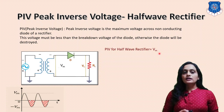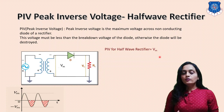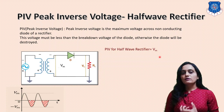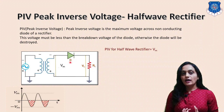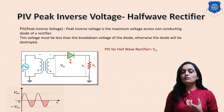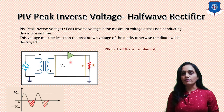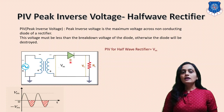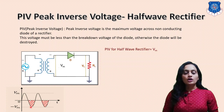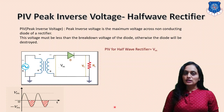This means that the diode selected for the half wave rectifier must have a breakdown voltage greater than VM, the negative peak of the input signal.